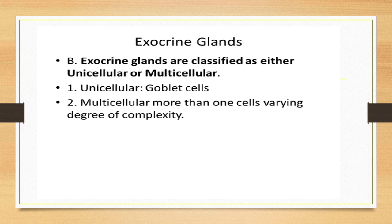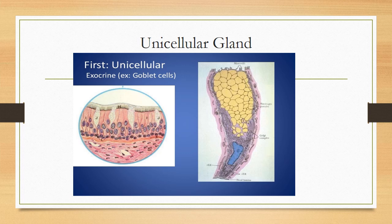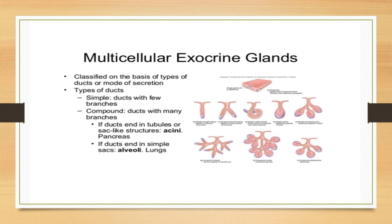Exocrine glands are classified as either unicellular or multicellular. An example of unicellular exocrine glands is the goblet cells. Multicellular exocrine glands are classified on the basis of their duct type or mode of secretion and can be simple or compound. If there is a single duct, they are called simple glands; if the duct branches, they are called compound glands.